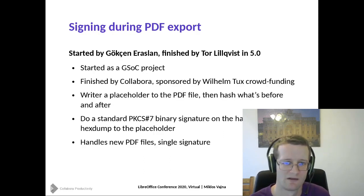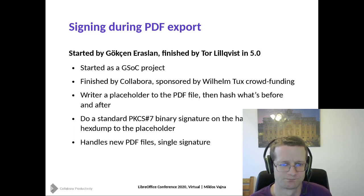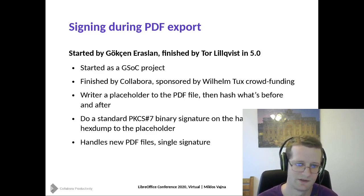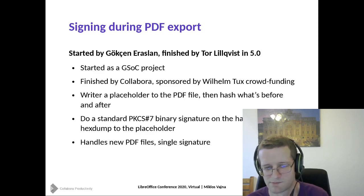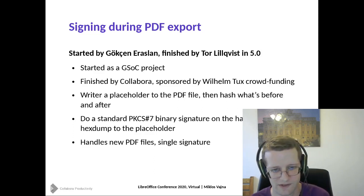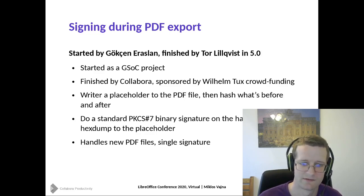The next step was that PDF export has an optional way to create a signature during the creation of the PDF file itself. This was initially done as a GSoC project and then Tor Lillquist completed it, because we had customers who wanted this. What we do is: we do the PDF export, write a placeholder for the signature, then do standard binary signing using X509 certificates. The PKCS#7 spec defines how to do a binary signature on the hash of the original content. We then hex-dump this signature and put it into the placeholder inside the PDF file, and what's unused is filled up with padding.